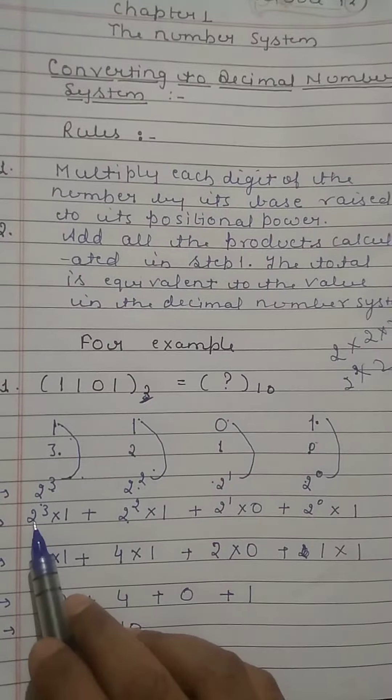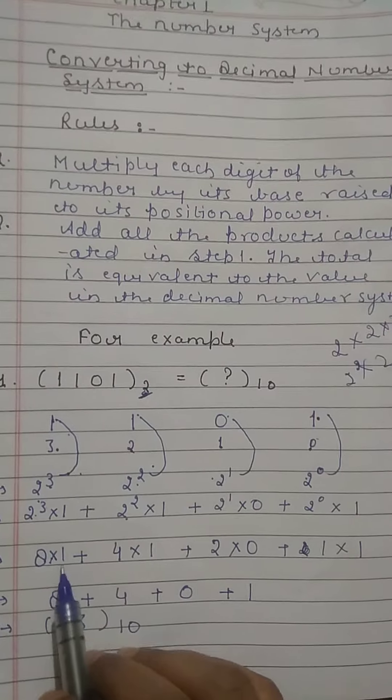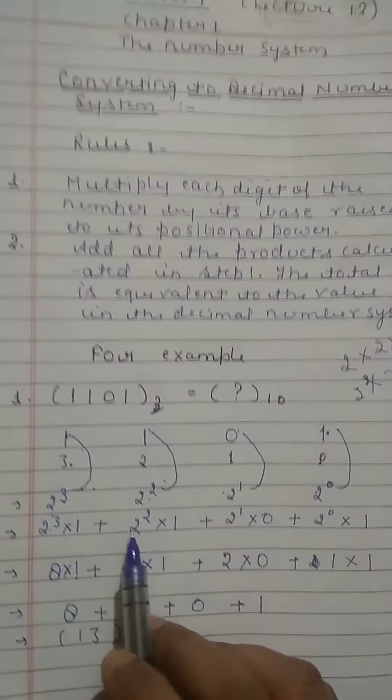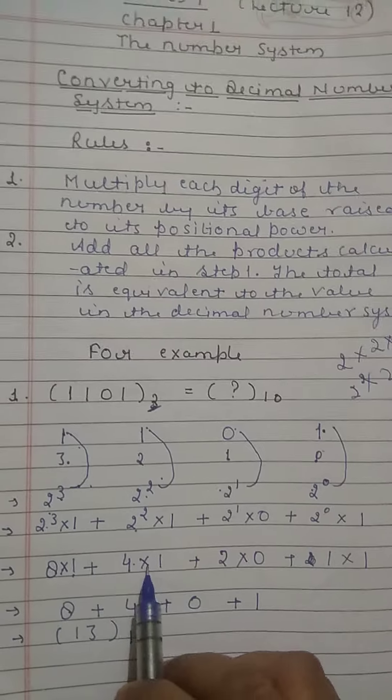So now here the value of 2 to the power 3 is 8, 8 into 1 equals 8. 2 to the power 2 equals 4, 4 into 1 equals 4.